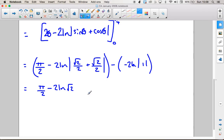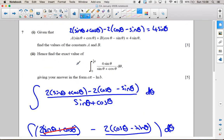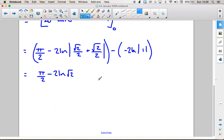If we just go back to the top of the question it says give your answer in the form a pi minus ln b. We've got our a pi, we've got half pi here but we've not got ln b because we've got this 2 in front of our ln. So if we raise this up as a power